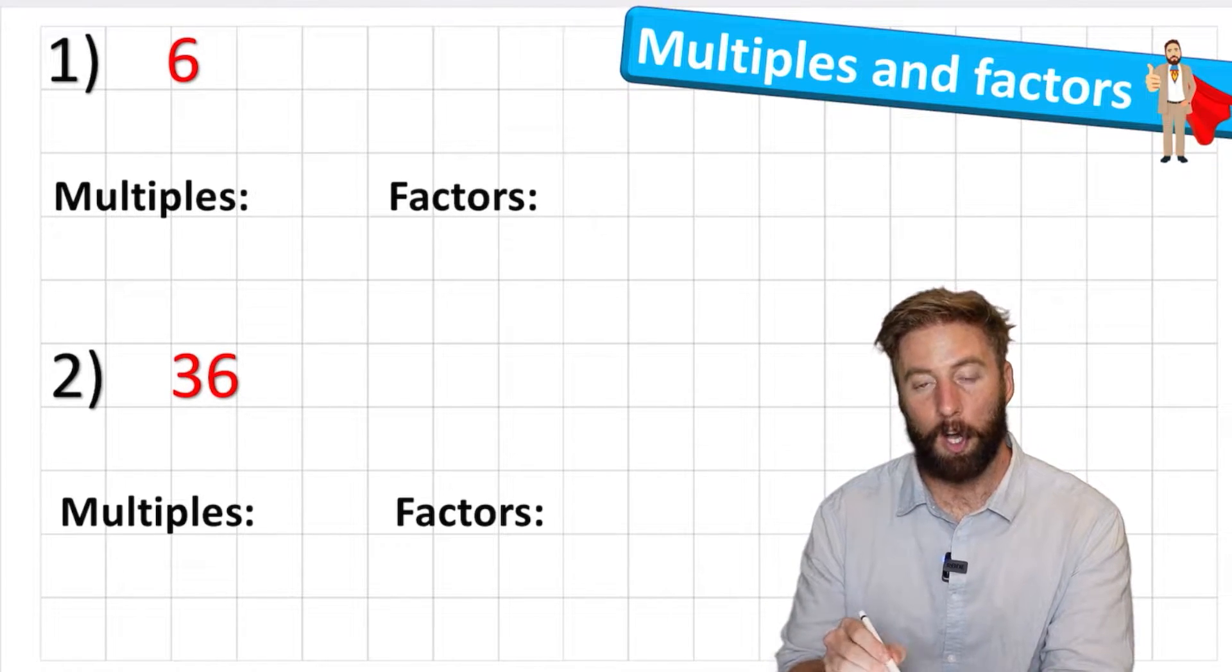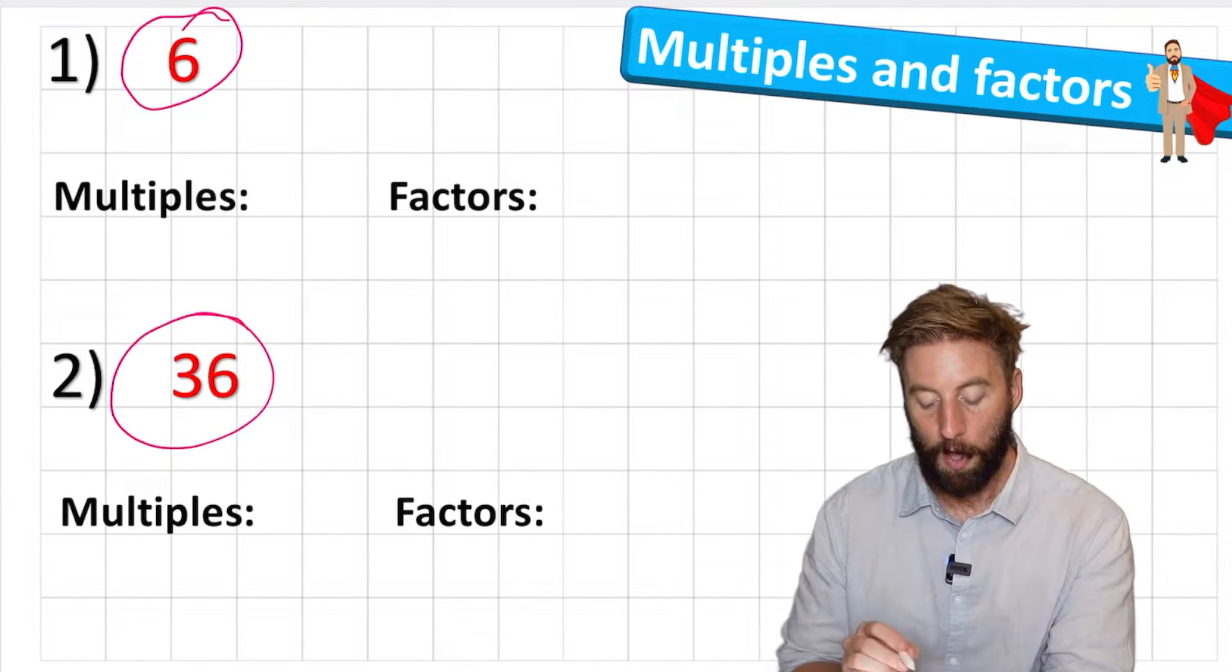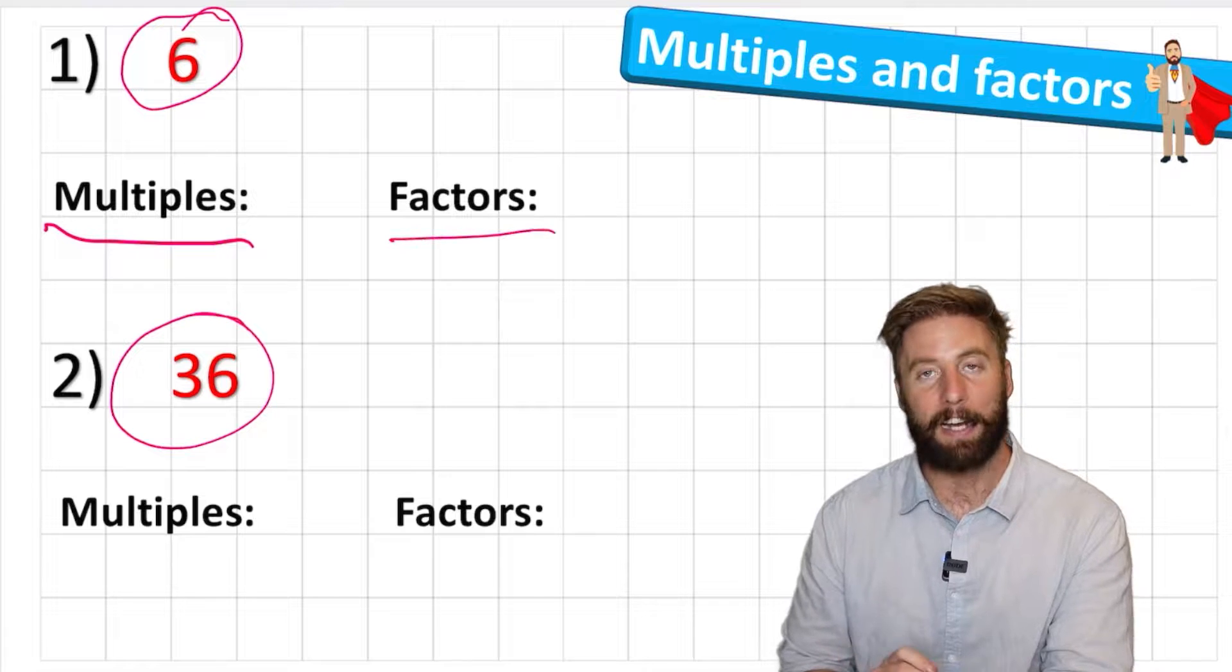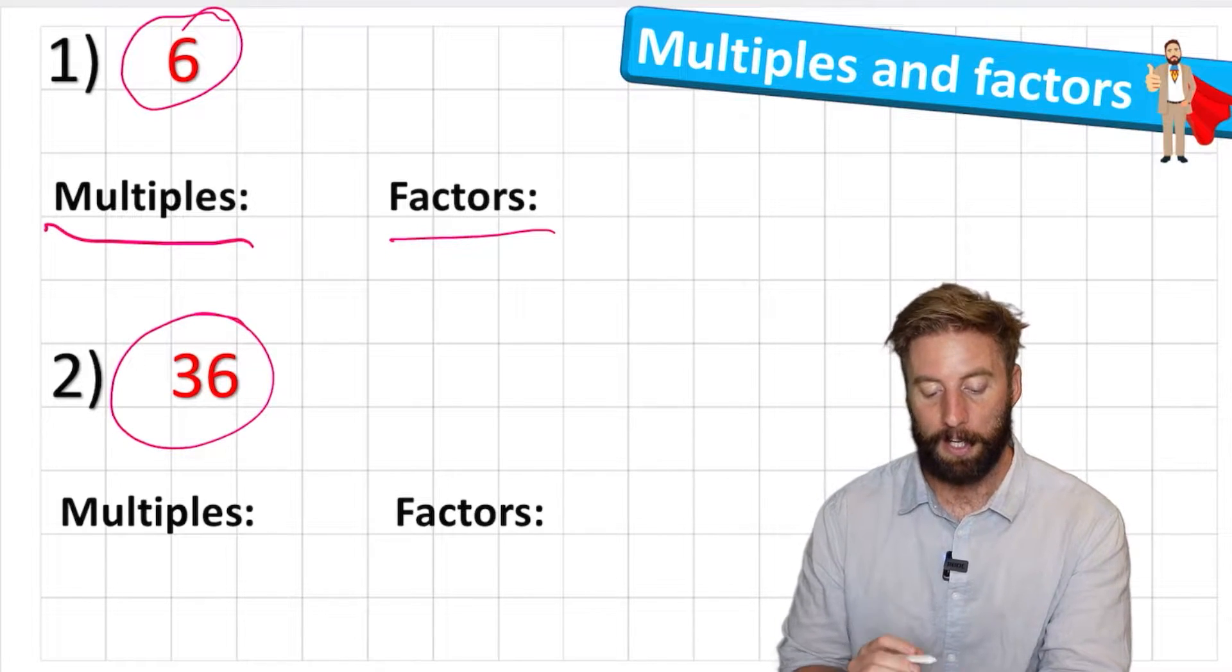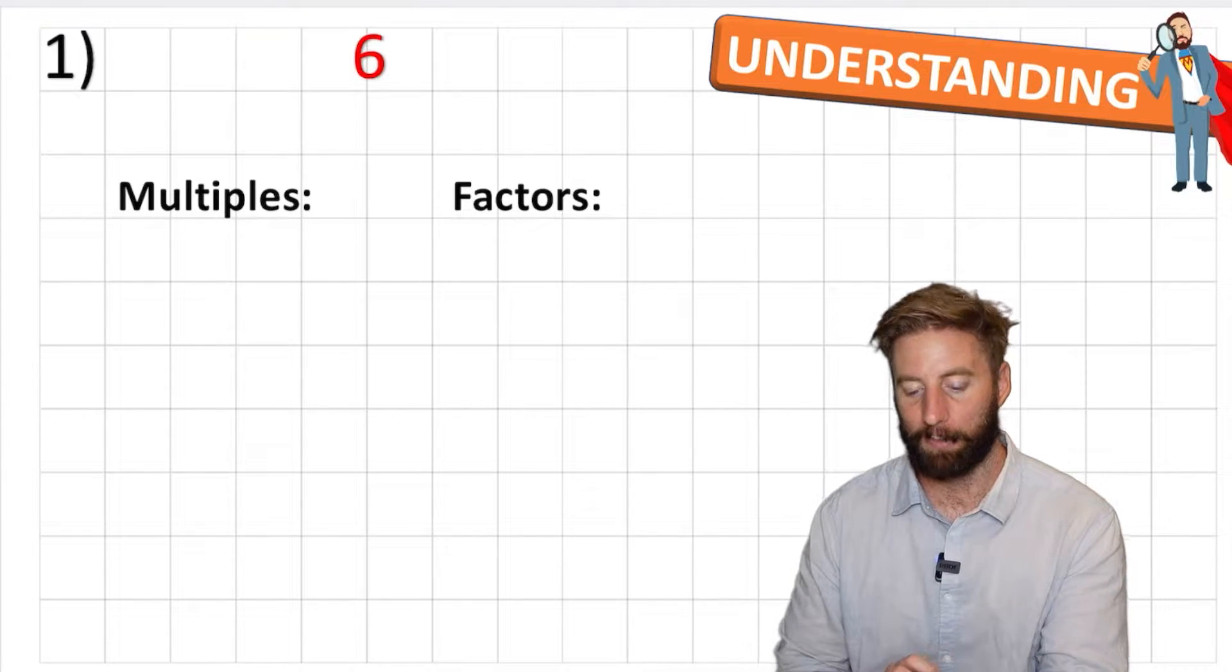This is something we really want to understand well before moving too far into multiplication because these are really essential elements. So let's have a look what they mean. We have two numbers here we're going to work on. We have 6 and we have 36. We're going to look for the multiples and the factors of both of these numbers. Let's do one at a time. Let's have a look at 6 first of all and let's look at our understanding phase.